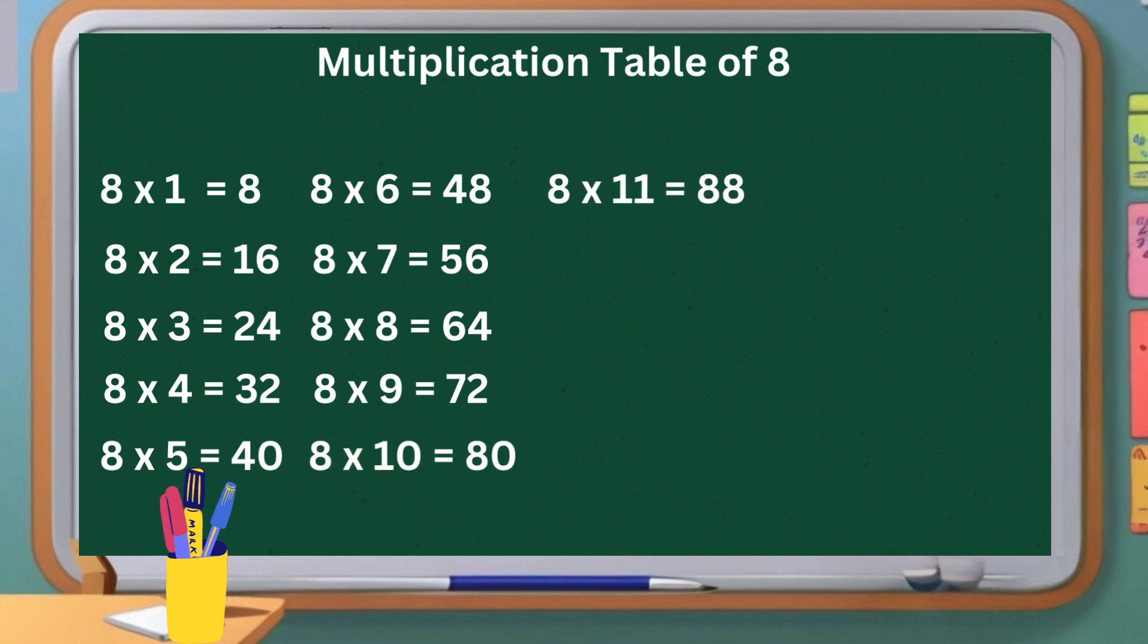Eight elevens are eighty-eight. Eight twelves are ninety-six. Eight thirteens are one hundred and four. Eight fourteens are one hundred and twelve. Eight fifteens are one hundred and twenty.